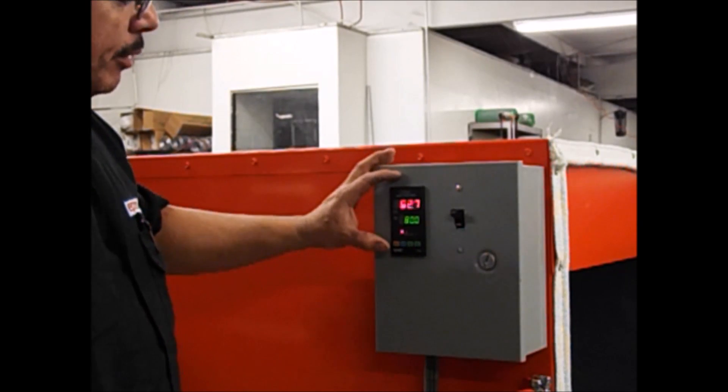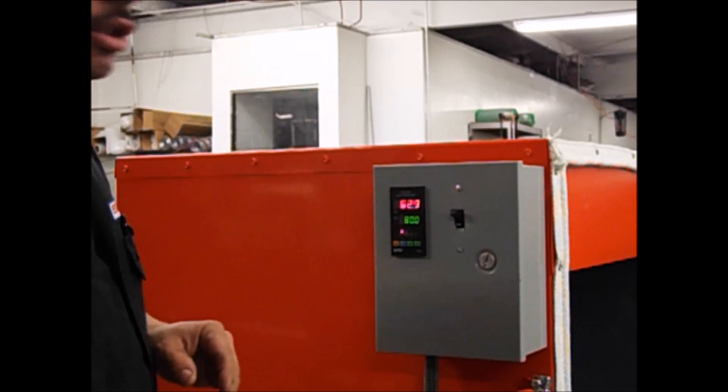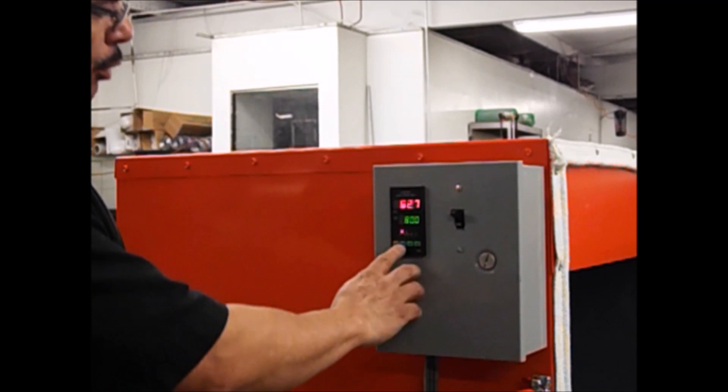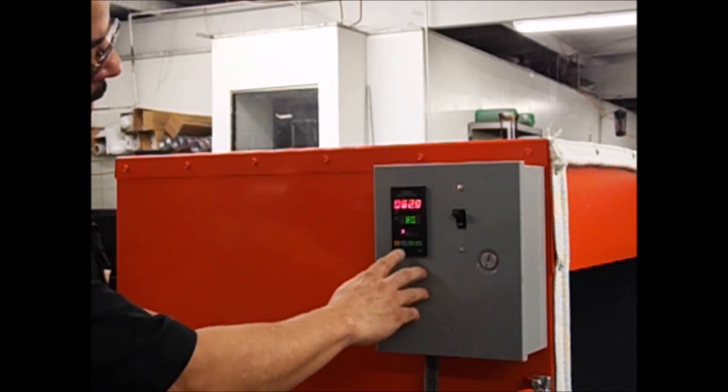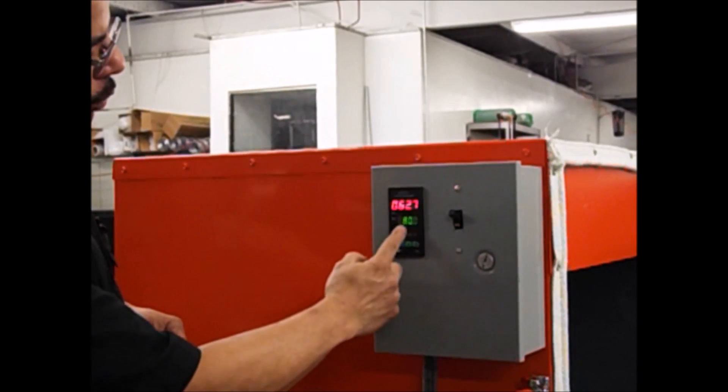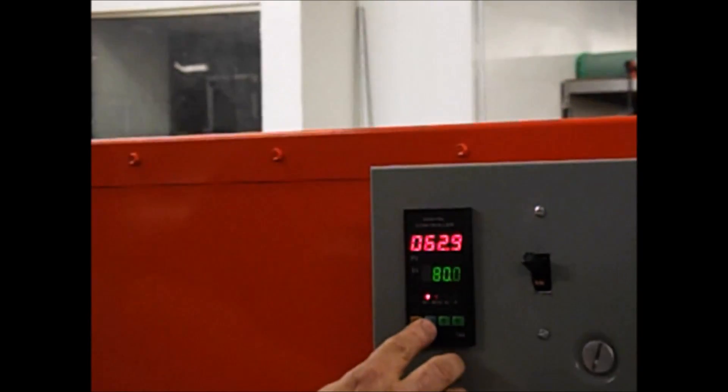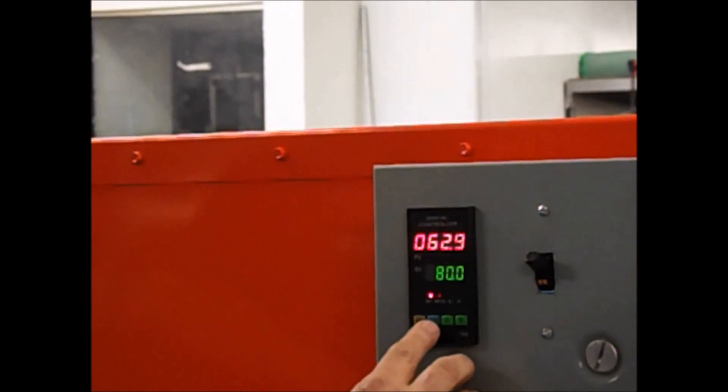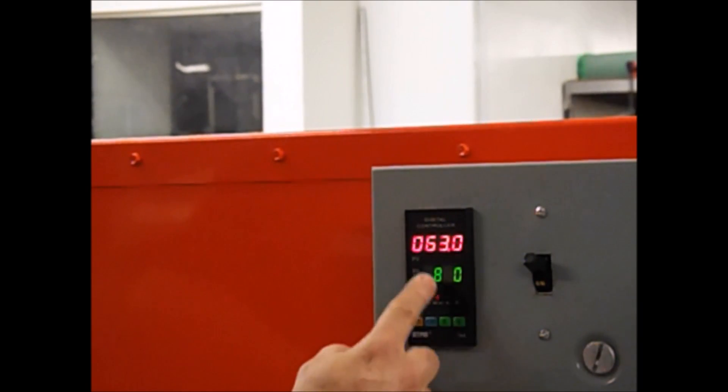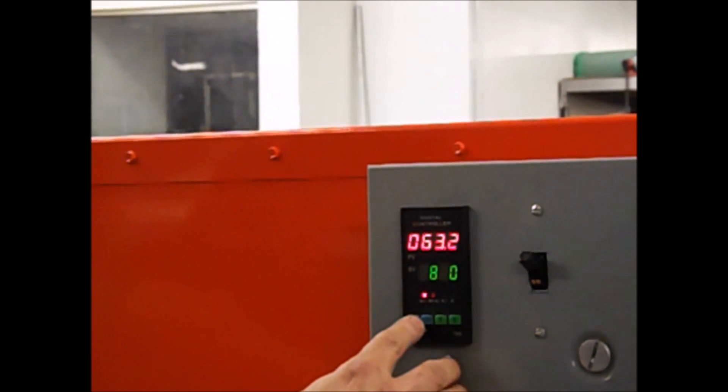The system is already programmed. If you ever need to change your temperature, all you have to do is push the blue button and it's going to give you an option of which digit you're going to move. If you keep pushing the blue button, it will skip to the next digit.